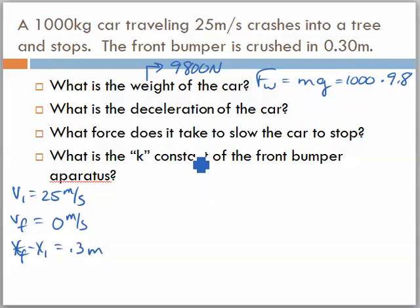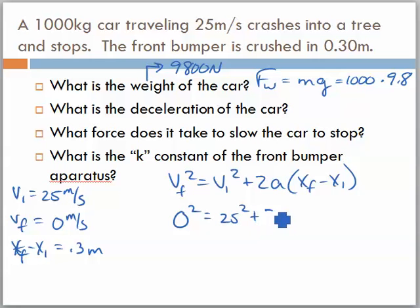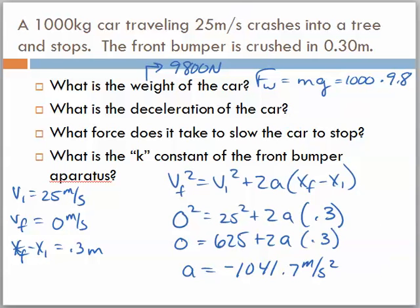To find that deceleration, I'm going to say VF squared equals VI squared plus 2 times A times that displacement. And that's 0 squared equals 25 squared plus 2 times A times 0.3. So I've went through here and found this deceleration to be negative 1,041.7 meters per second squared. It's negative because it's decelerating.